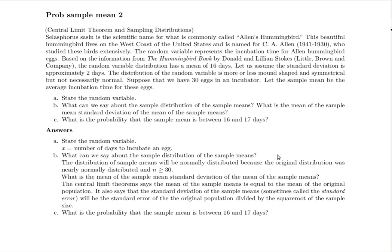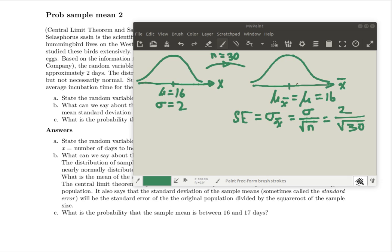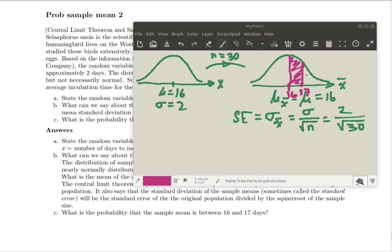Our third question is: what is the probability that a sample mean is between 16 and 17 days? We're looking at this distribution and finding the probability that the mean of a sample is between 16 and 17 days — that's the red area. The blue area (up to 17) can be found with pnorm, and the orange area (from the mean to the left) is going to be one-half. So the blue area minus the orange area gives us the probability of that red area.